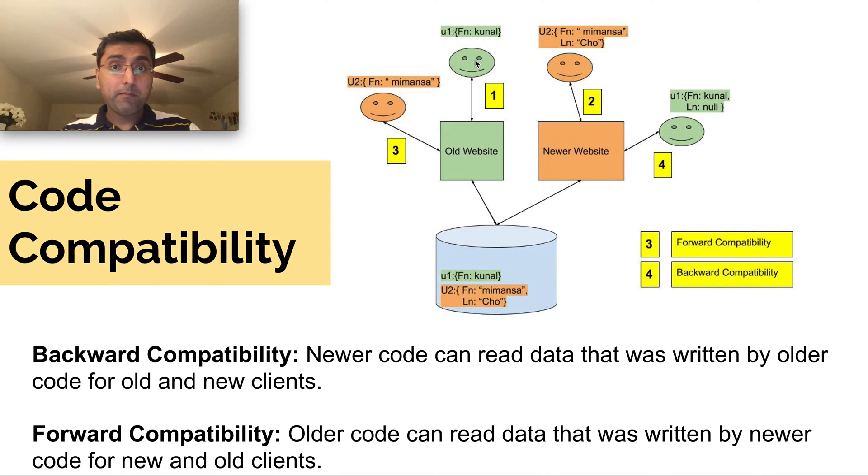Similarly, the opposite is backward compatible. Like when a new web service continues to serve an old client or a request that uses the old data store. Like the new website should understand the first name and last name, but on the data store it only gets the first name. So then it puts in default values and then still works for the user. So that's backward compatibility.